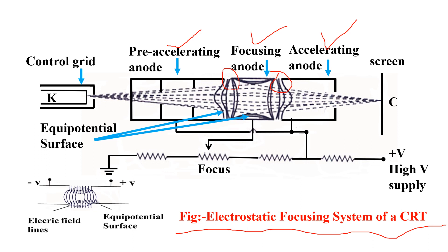The focusing anode is maintained at a lower positive potential. Due to this special arrangement, an electric field is formed in the gap. The spreading of electric field lines occurs here due to electron repulsion.